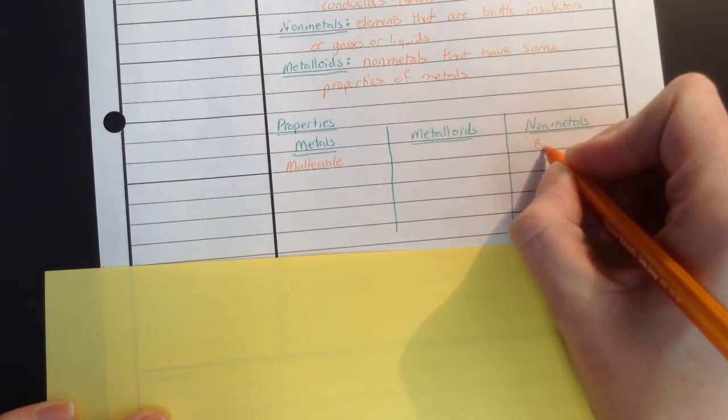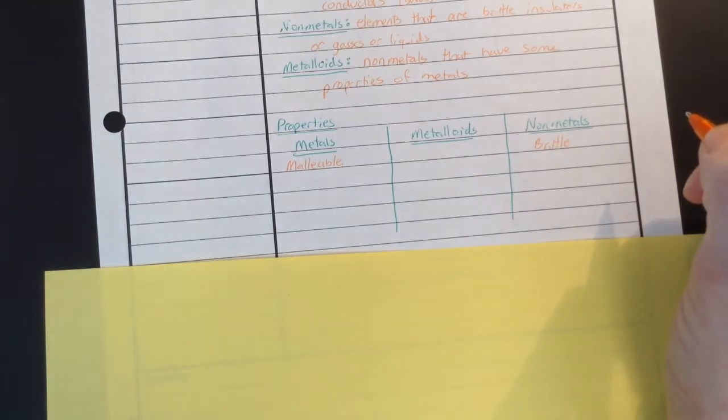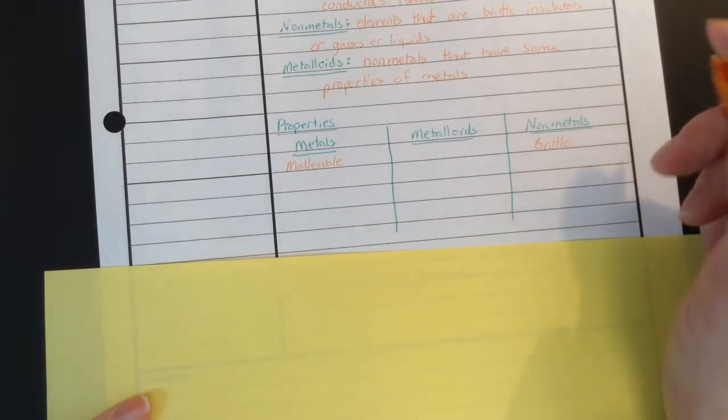Nonmetals are not. Instead of bending, they generally break if they're solid. And the word for that is brittle. That means that you can't bend them and shape them. They just kind of crumble in your fingers.